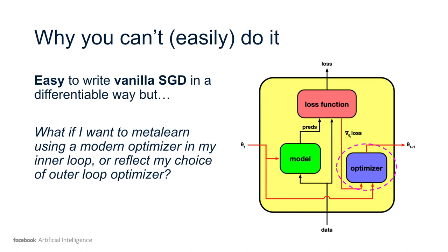What if you want to meta-learn using a modern optimizer in your inner loop, or to reflect the choice of optimizer you're using in your normal outer loop training if you're doing something other than MAML?